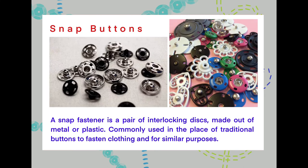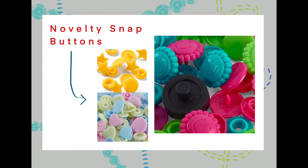Let's look more at snap buttons. A snap fastener is a pair of interlocking discs made out of metal or plastic, commonly used in the place of traditional buttons to fasten clothing and for similar purposes. You'll see snap buttons commonly used on shirts and bags. I've put some examples of novelty snap buttons — these are plastic but still do the same job. We've got a smiley face, flower, star and heart there.